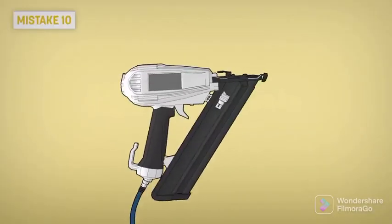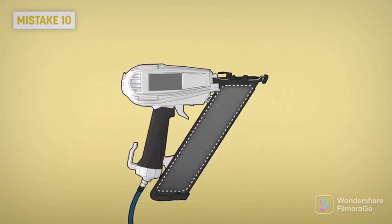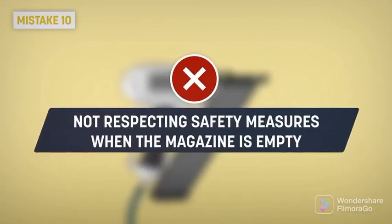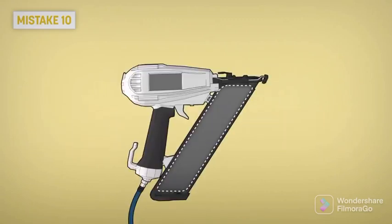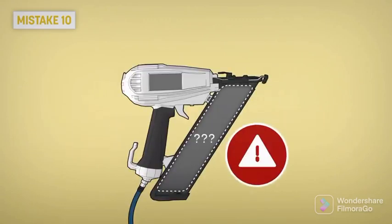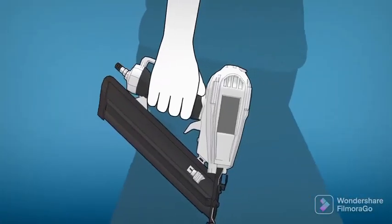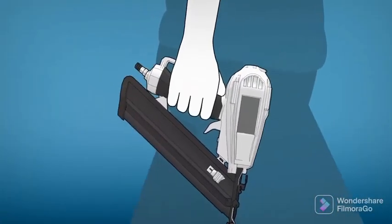Mistake 10: Not respecting safety measures when the magazine is empty. You could be wrong. There could be a nail left, or someone may have loaded the nailing gun. That's why you always handle the nailing gun as if it is loaded, even if you think it's empty.